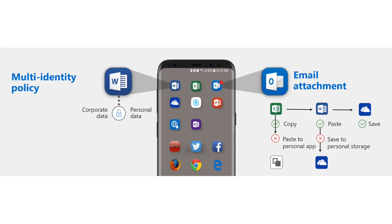The other side of mobile application management is using app protection policies — I've made a whole video about this and will put the link in the description. This allows you to protect the application and what happens with that data. For example, if you have an email in Outlook on your mobile phone, you might want to move data to other Office applications, but you wouldn't want to move corporate information into Gmail or the Notes app on your iPhone. With app protection policies, we can control what users can do with data within these applications, and we can set security boundaries like requiring a PIN.